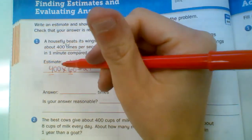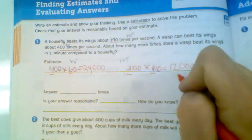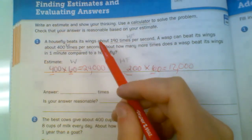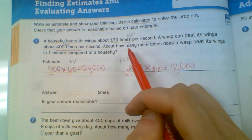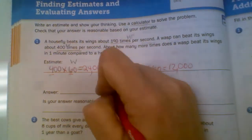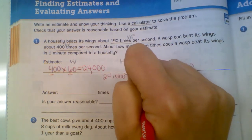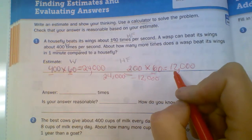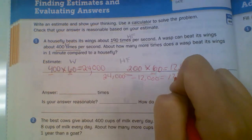Now 400, back to the wasp, times 60. 4 times 6 is 24. How many zeros? Oops, sorry, it's blurry. How many zeros? 1, 2, 3. 1, 2, 3. Okay, so it's saying, so that's part A. So we've converted that to minutes. We found out how many they would do in a minute. And now, how many more times does the wasp beat its wings than a housefly? So our wasp answer is 24,000 minus 12,000.